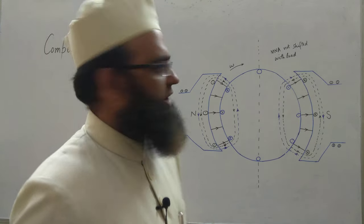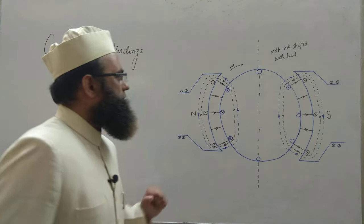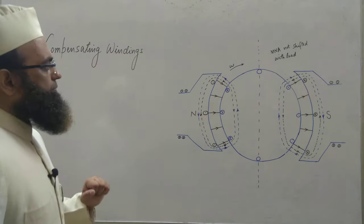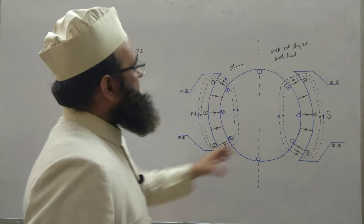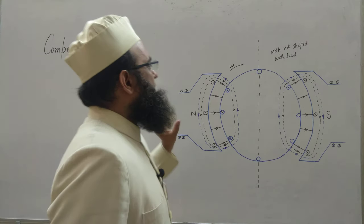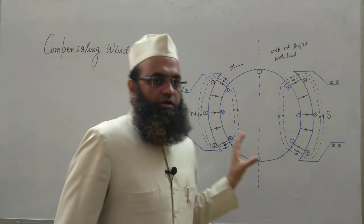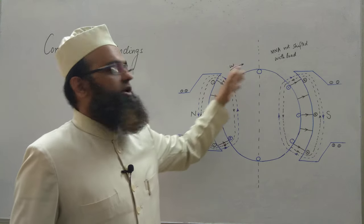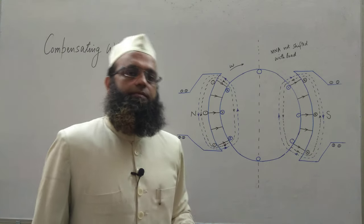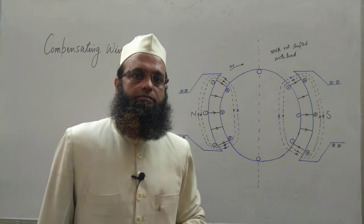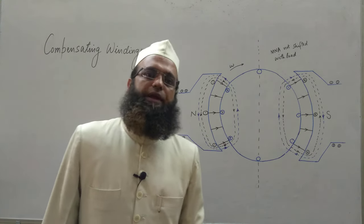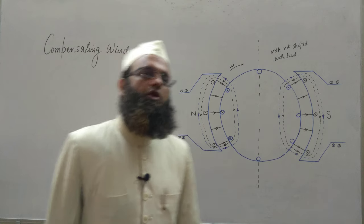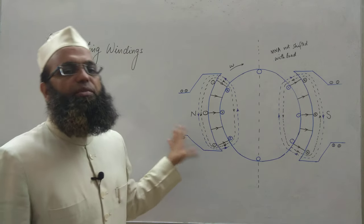Since MNA is not going to shift, the MNA shift problem — that is, the voltage spiking — will not be there. At the same time, the effect of armature flux on the field flux is nullified, so flux weakening will not be there. Flux lines will not bunch up on a particular pole tip as was the problem discussed during armature reaction. However, compensating windings will not solve the problem of inductive voltage kick, that is the L·dI/dt voltage — that problem will not be solved by compensating windings.